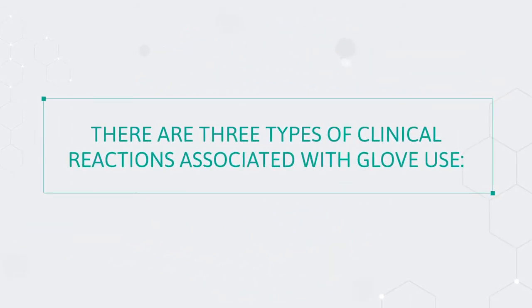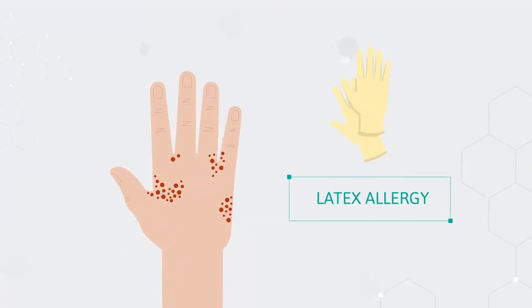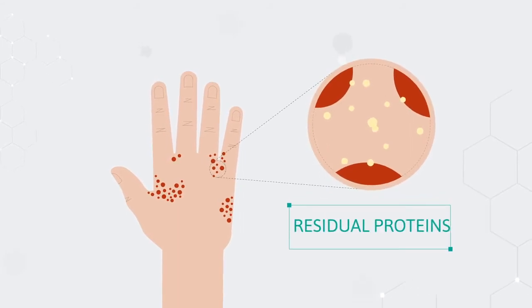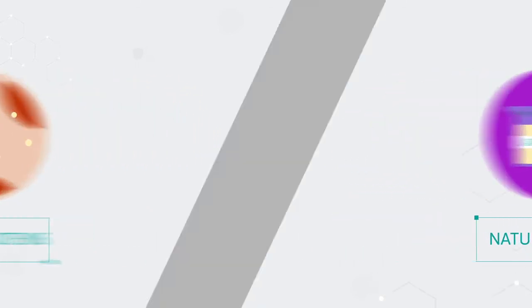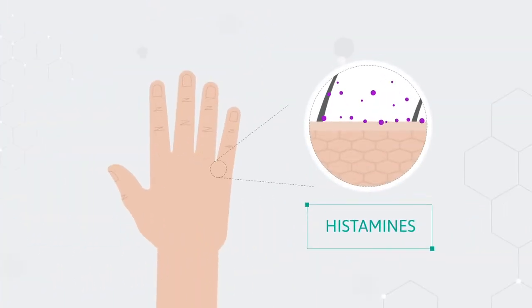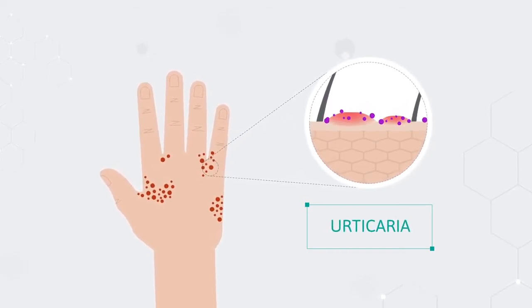There are three types of clinical reactions associated with glove use. Type 1 is a latex allergy. These responses are allergies that derive from a sensitivity to the residual proteins found in natural rubber latex, NRL. Upon contact with NRL products, histamines are released into the skin tissues, creating cutaneous effects such as itching and hives, urticaria.